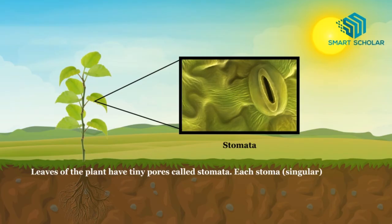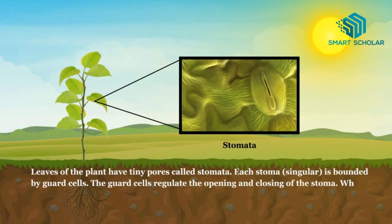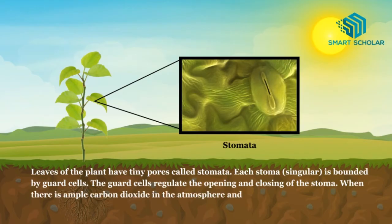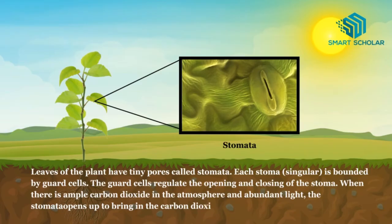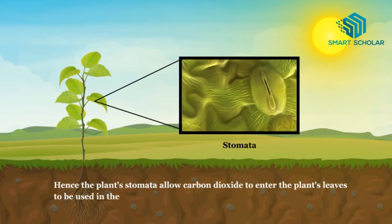Leaves of the plant have tiny pores called stomata. Each stoma is bounded by guard cells. The guard cells regulate the opening and closing of the stoma. When there is ample carbon dioxide in the atmosphere and abundant light, the stoma opens up and brings in the carbon dioxide required for the process of Photosynthesis. Hence, the plant's stomata allow carbon dioxide to enter the plant's leaves to be used in Photosynthesis.